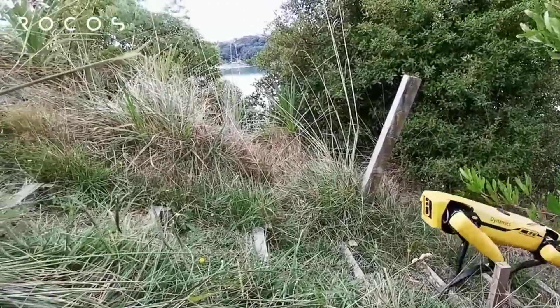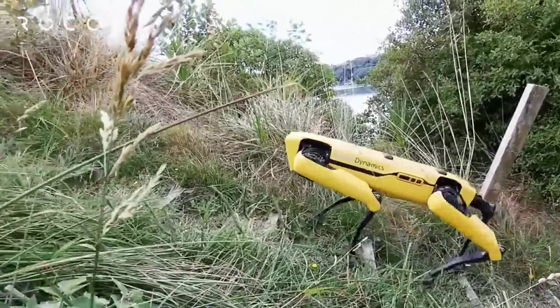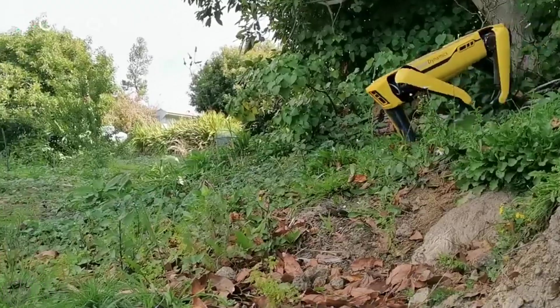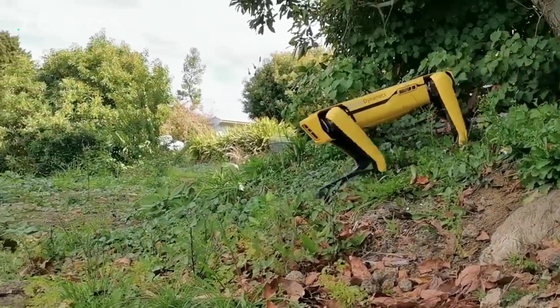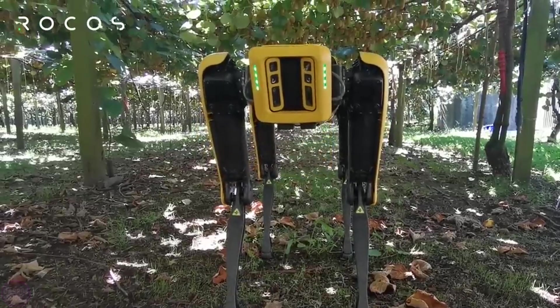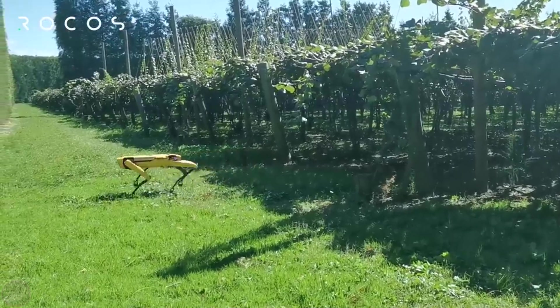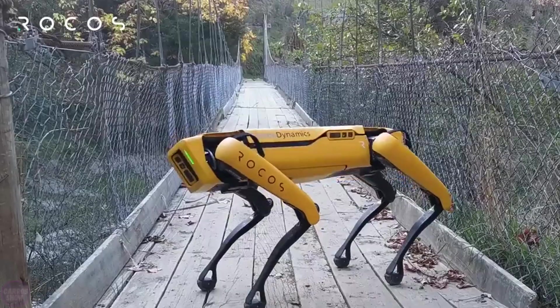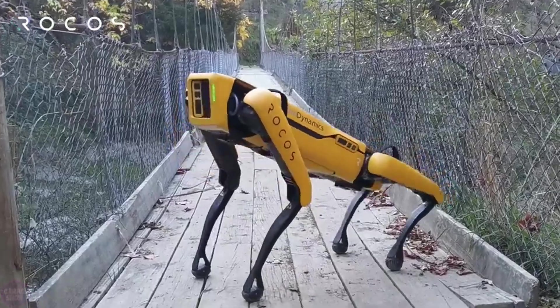Rokos plans to collaborate with Boston Dynamics to develop a software platform through which the Spot robot can perform the actions shown in the video. This means it can assist in herding sheep, inspecting various crop yields, and creating real-time route maps. According to Rokos, the use of such robots in agriculture increases food production efficiency, enhances yield estimation accuracy, and reduces the workload on workers.